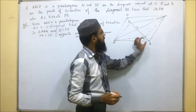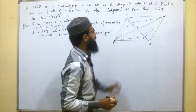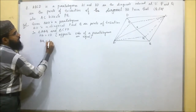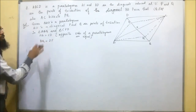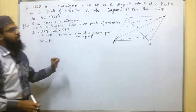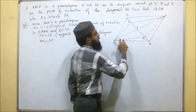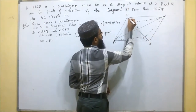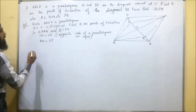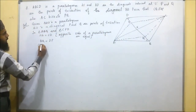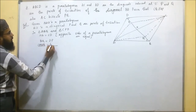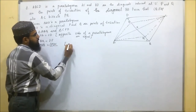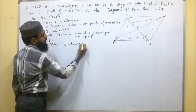Next, BQ and DP are equal because P and Q are points of trisection of BD. Also, since AB and CD are parallel lines, angle ABQ is equal to angle PDC — these are alternate angles, and alternate angles are equal.